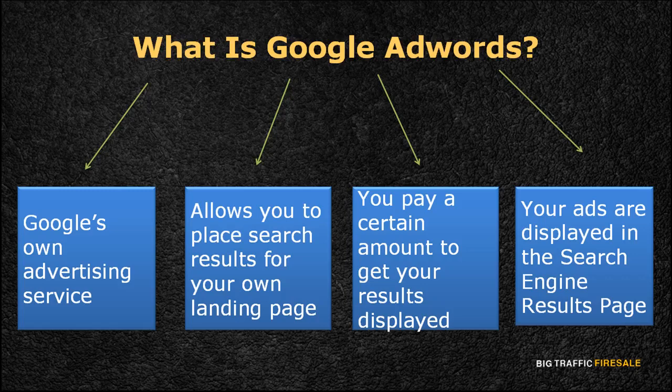So, what is Google AdWords and how do you utilize it to generate traffic? Google AdWords is Google's own advertising service which allows you to place search results for your own website or landing page. The search results for your product or service will appear on the search engine results page — the SERP — which you would have to pay a certain amount to get your results displayed. For those still new to internet marketing, Google AdWords is one of the easiest and most practical ways to generate traffic to your landing page.